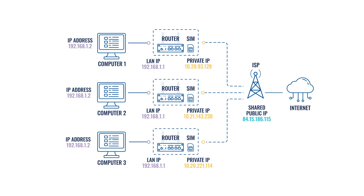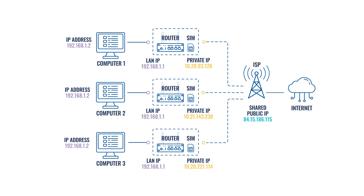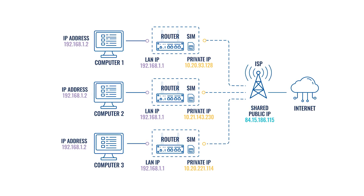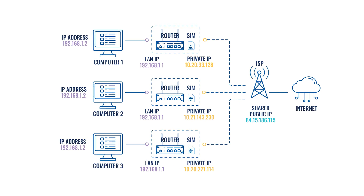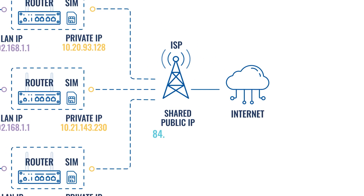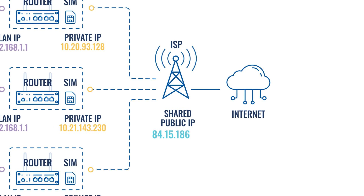Let's take an example of three routers without a public IP address connecting to the Internet via their respective SIM cards. All of the routers have different private IP addresses. However, they are all seen as 84.15.186.115, so all of the routers have the same shared public IP. But if you try to access them from the Internet using your shared public IP, you would only reach the ISP due to network address translation.